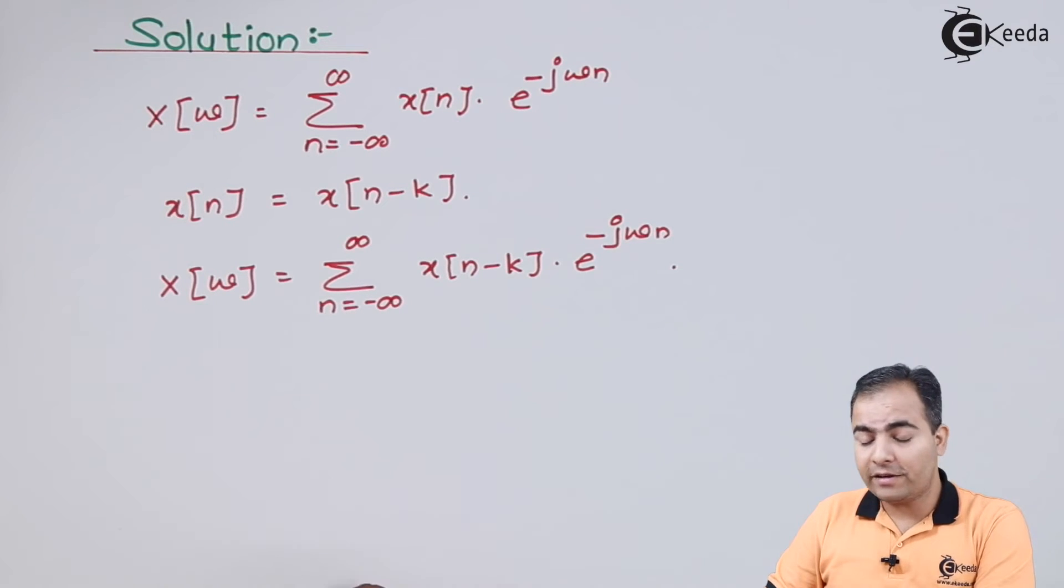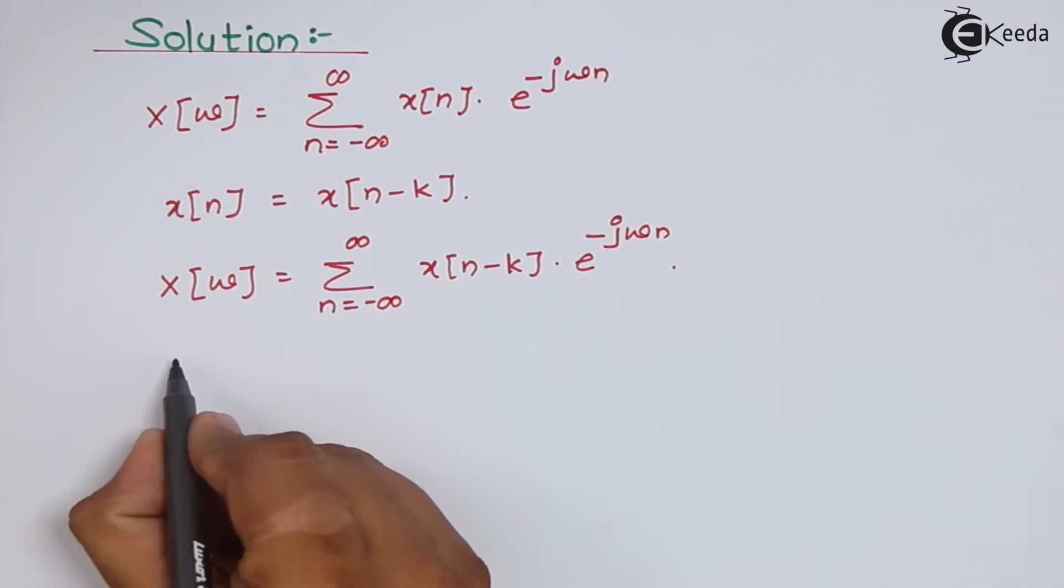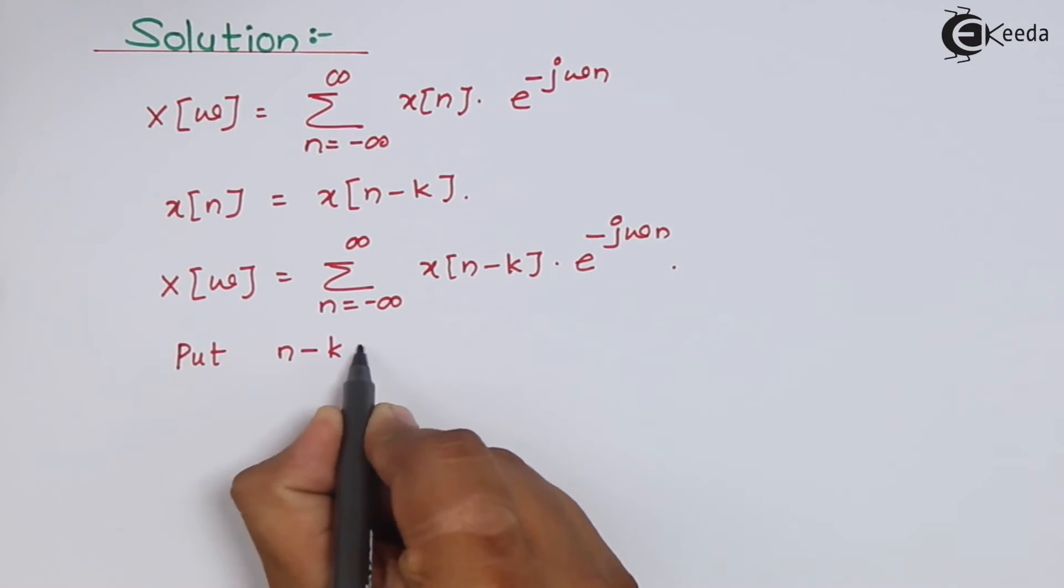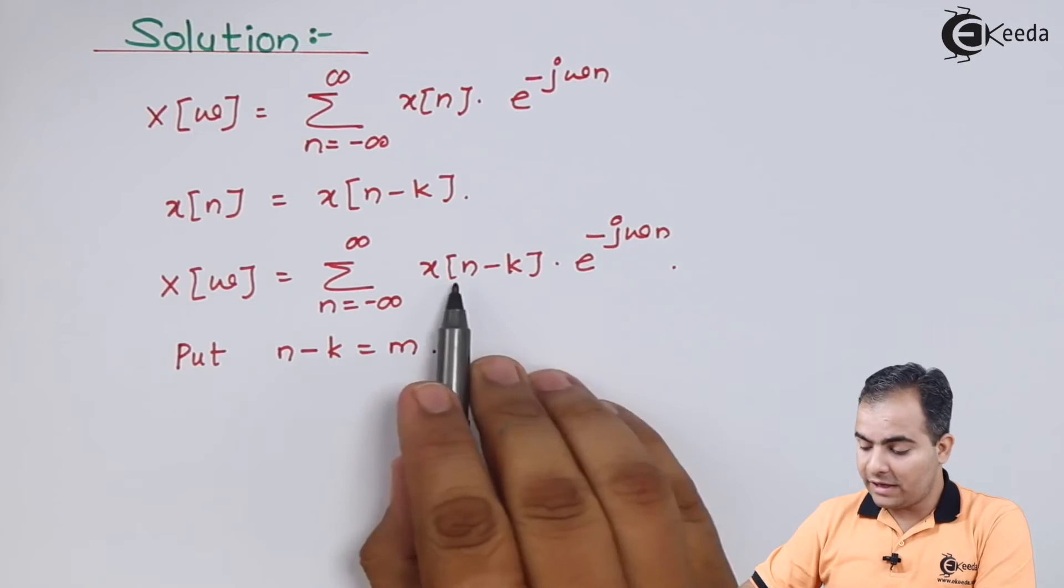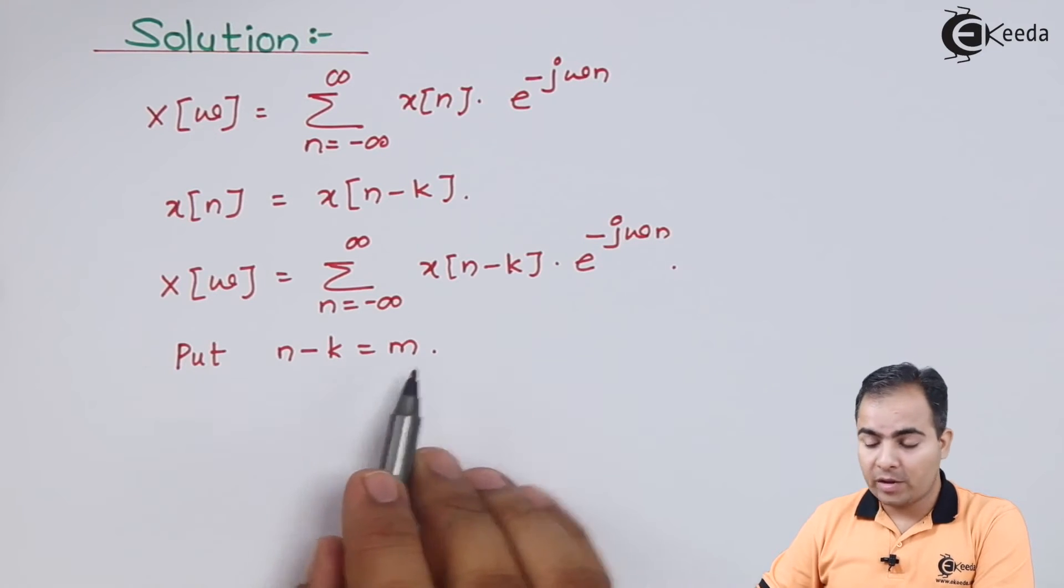So let my different variable be m. So this n-k is replaced by m. But what about this n?